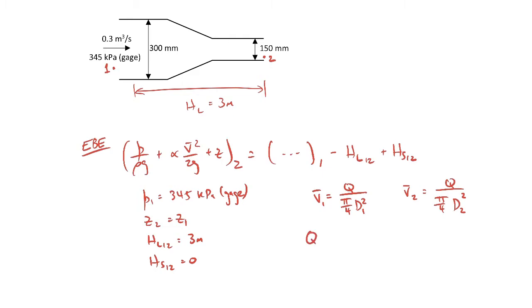We can find those average velocities. We know the volumetric flow rate is 0.3 cubic meters per second, we know d1 is 300 millimeters, we know d2 is 150 millimeters. If you're careful with your units and you plug in the numbers, you'll get v1 comes out to be 4.24 meters per second and v2 comes out to be 17 meters per second.